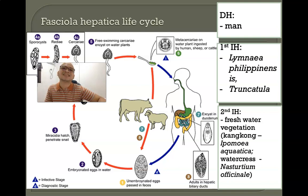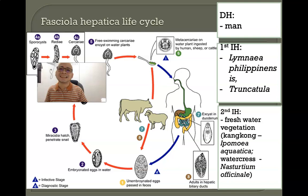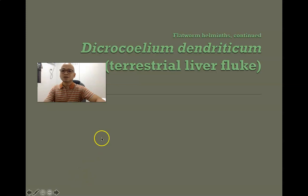The most common aquatic vegetation here in the Philippines is kangkong. While kangkong is a delicious and nutritious food often used in sinigang, be sure to wash it thoroughly and heat it sufficiently to kill the metacercaria. That concludes the life cycle of Fasciola hepatica.